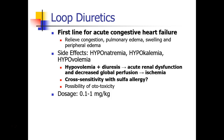Loop diuretics are the first-line treatment for acute congestive heart failure. This occurs when a patient's heart is unable to pump blood strongly enough, and there starts to be a backup of fluid, first in the left heart, and then backing up into the pulmonary circulation. Patients who have congestive heart failure may have pulmonary edema — fluid buildup in the lungs — and if it continues, the swelling will back up into the peripheral vasculature, leading to peripheral edema. When we give a loop diuretic, we decrease the patient's total body water, decrease the volume in their vasculature, and help alleviate the congestion.